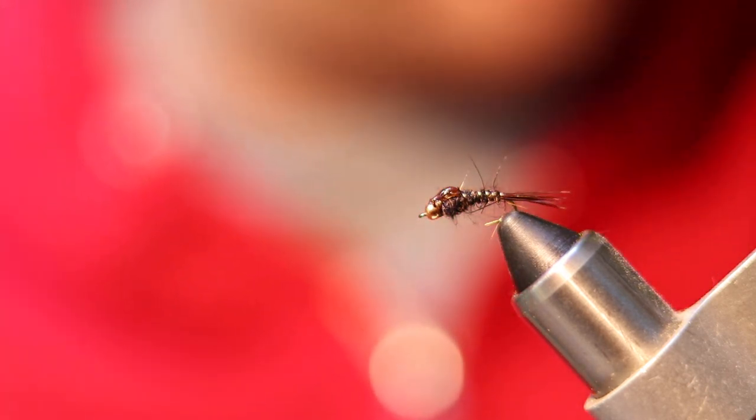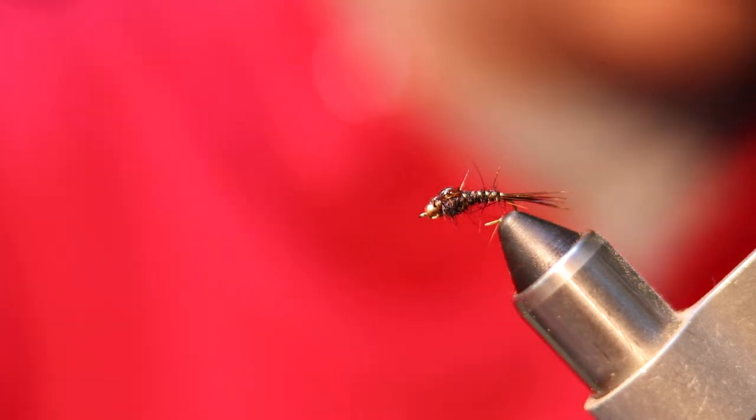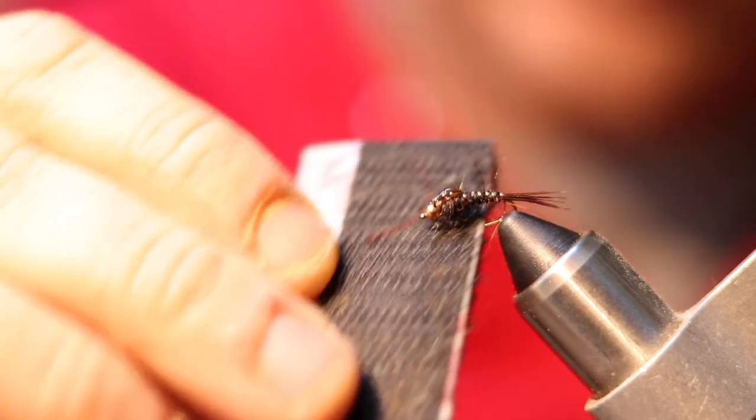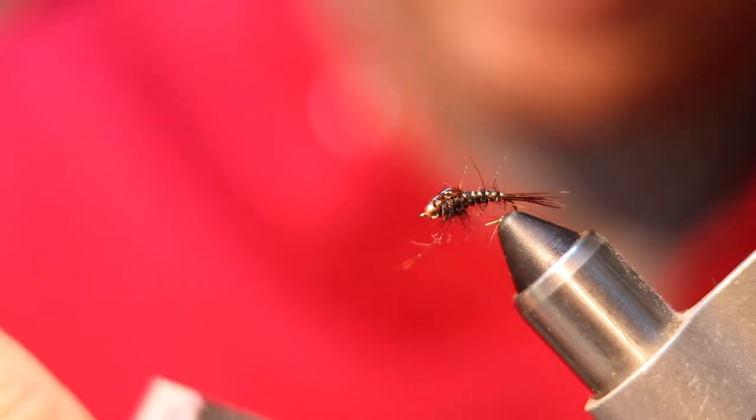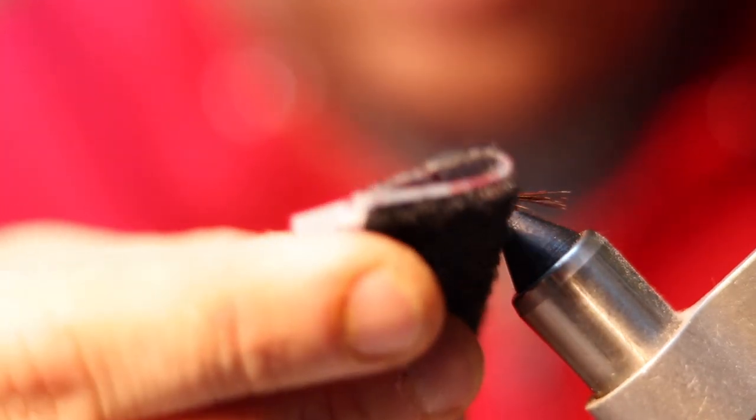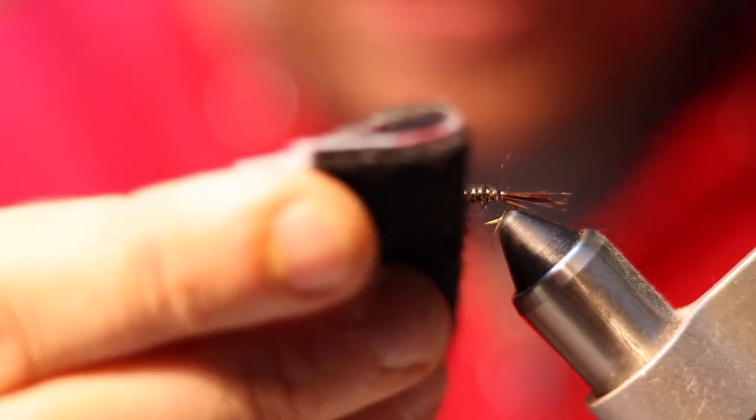What you can do at the end is just take a little piece of velcro and just kind of fluff the fly up a little bit. It pulls some of that dubbing out, adds a little bit to the quote-unquote bugginess of the fly, gives it appearance of maybe more legs on the fly.